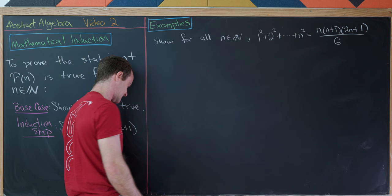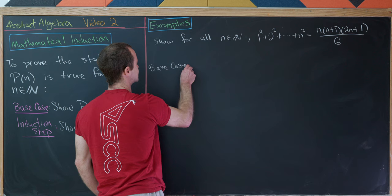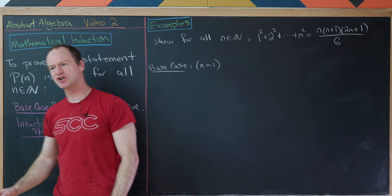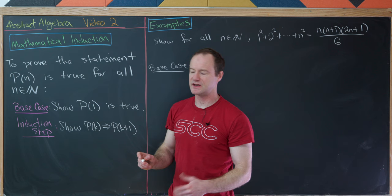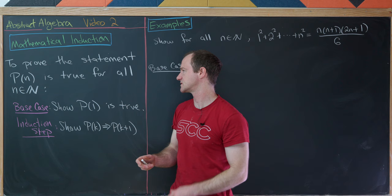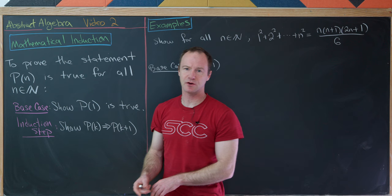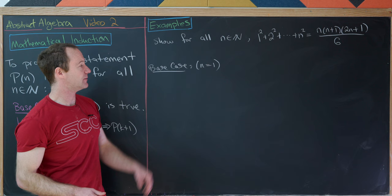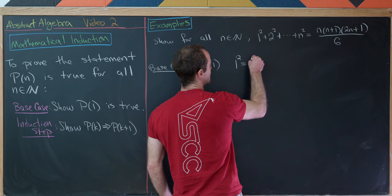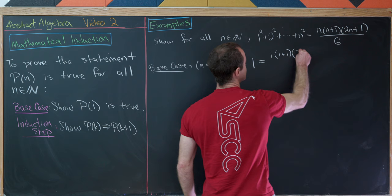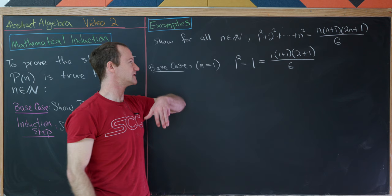Let's start with our base case, which will be N equals 1. I should mention there's another version called strong induction, which we won't be covering here. Also, sometimes the base case may not start at N equals 1 — it might be for a subset of natural numbers. The base case here is N equals 1, in which case we have 1 squared equals 1, which equals 1 times 2 times 3 all over 6. So 1 squared matches the left-hand side, and the formula matches the right-hand side.